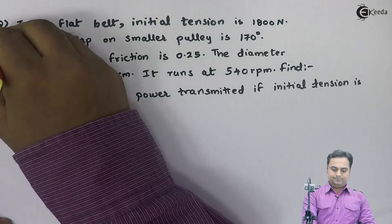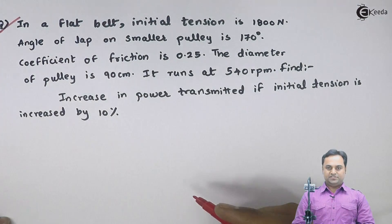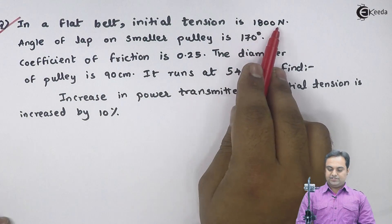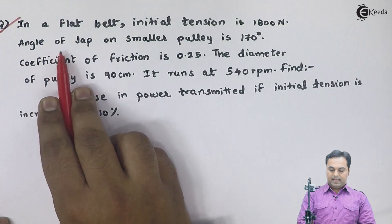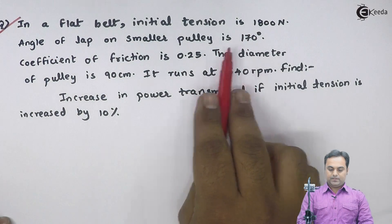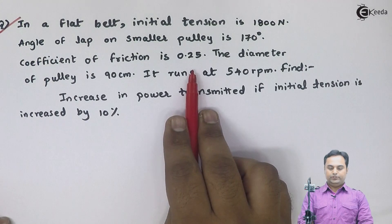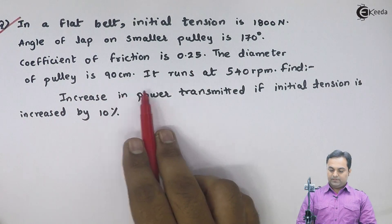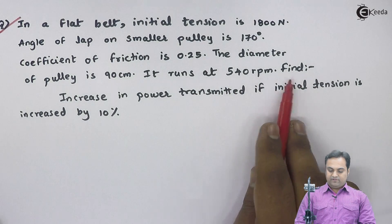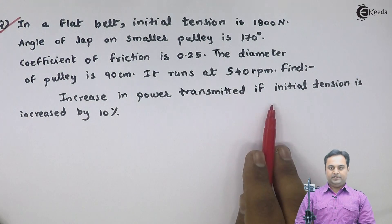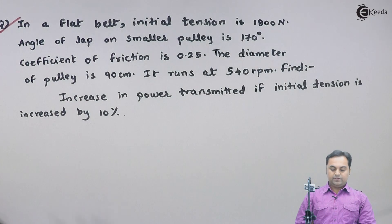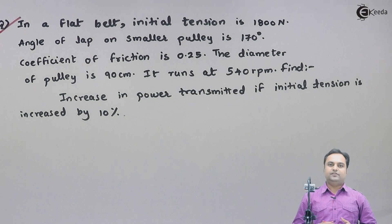Let us take the next question. In a flat belt, initial tension is 1800 Newton, angle of lap on smaller pulley is 170 degrees, coefficient of friction is 0.25, the diameter of pulley is 90 centimeter, it runs at 540 rpm. Find the increase in power transmitted if the initial tension is increased by 10%.